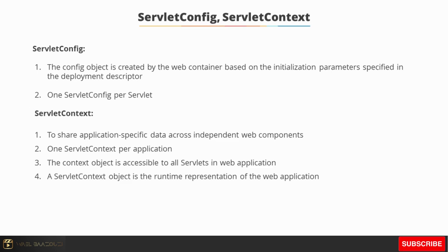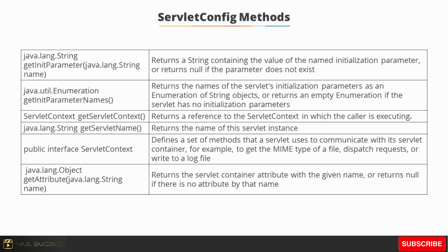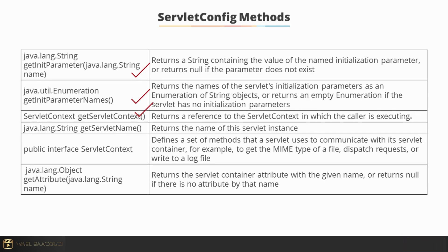Here are some of the methods available in ServletConfig: getInitParameter, which returns a string containing the initialization parameters; getParameterNames, which returns an enumeration of string objects; getServletContext, which returns a reference to the ServletContext; and getServletName, which returns the name of the servlet instance.